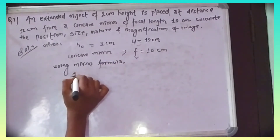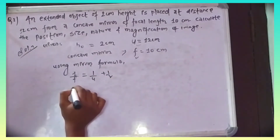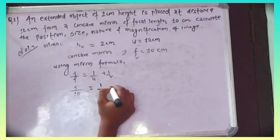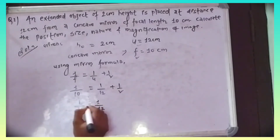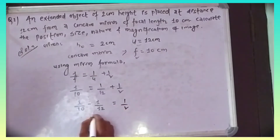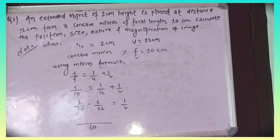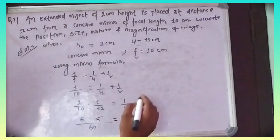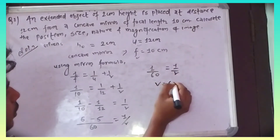Using mirror formula: 1/v + 1/u = 1/f. So 1/v = 1/f minus 1/u = 1/(−10) minus 1/(−12) = −1/10 + 1/12. Solving: 1/v = (−6 + 5)/60 = −1/60, so b is equal to −60 cm.